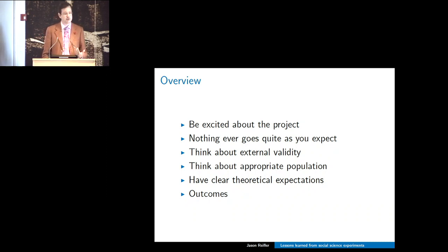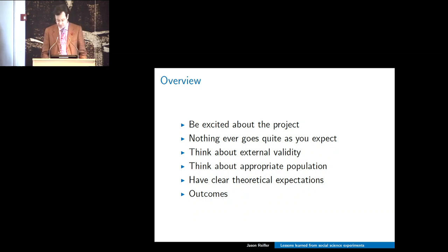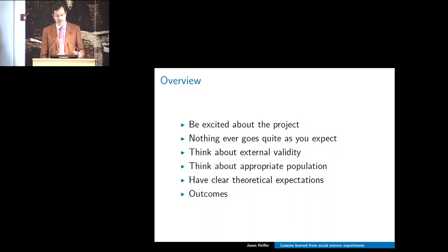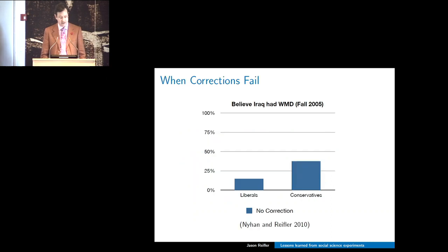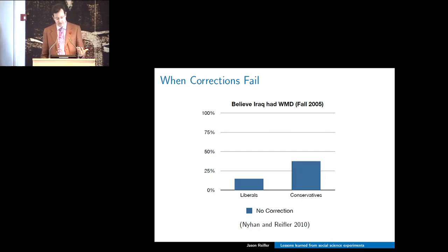I think it's essential for good social science to have very clear theoretical expectations—theory should be driving our work. Sometimes when we're doing field interventions there may be more empirically driven questions, but clear theoretical expectations are important. And then finally, you want to think about the outcomes you're going to measure.